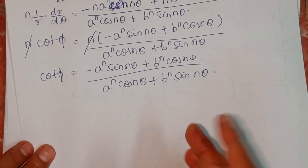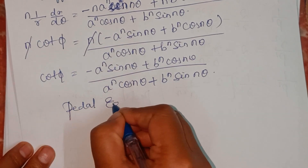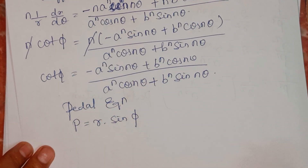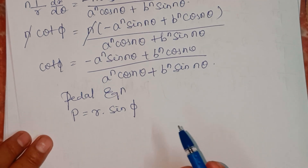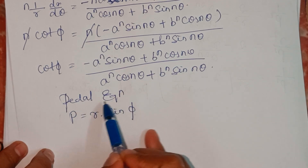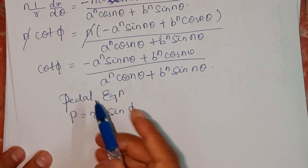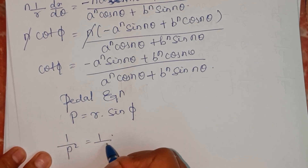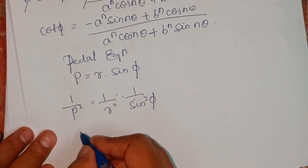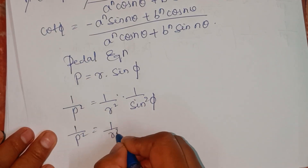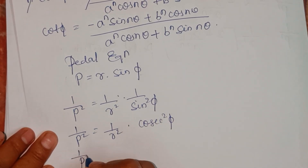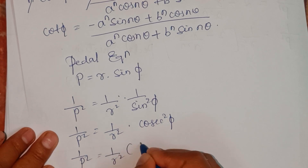We know the pedal equation: p = r·sin(φ). When we cannot find φ explicitly, we square the pedal equation and take the reciprocal, giving 1/p² = (1/r²)·(1/sin²φ) = (1/r²)·cosec²(φ). Now cosec²(φ) can be written as 1 + cot²(φ).